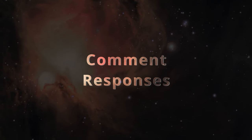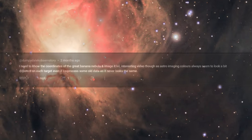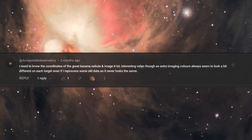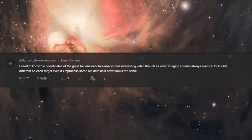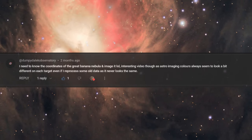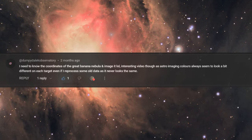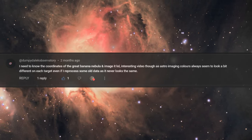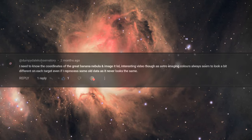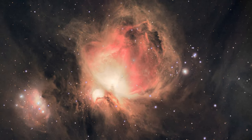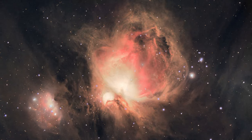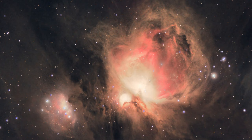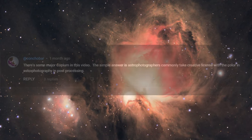Okay, now for some comments from the last video. Dale says that imaging colors always seems to look a bit different on each target even if I reprocess some old data as it never looks the same. Yep, 100% agree. Happens with me too. We just don't have the experience to know what the color should look like. If we are going to take a picture of a tree with RGB filters and a monochrome camera, I'm pretty sure that when we combine the filters, we'd get the colors more consistent. Maybe not 100% consistent each time we would do it, but more consistent than in astrophotos.